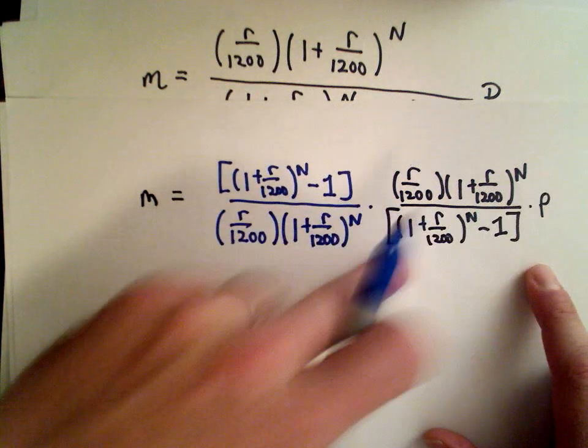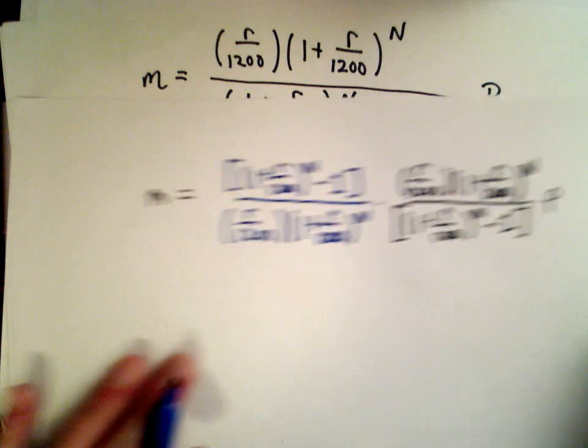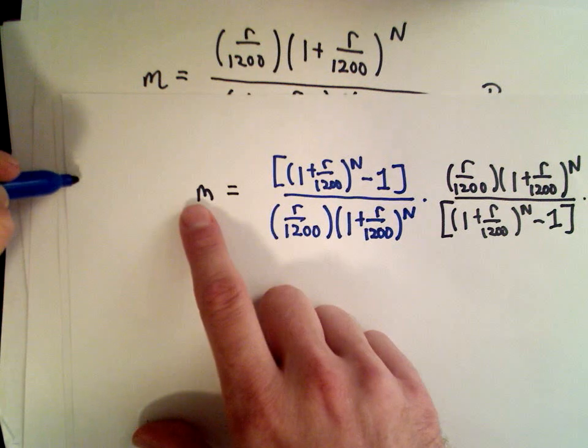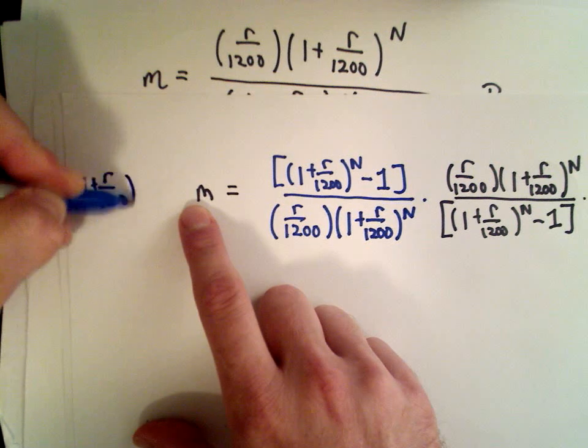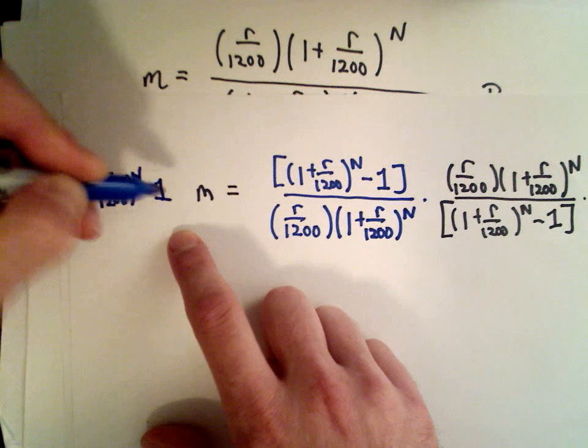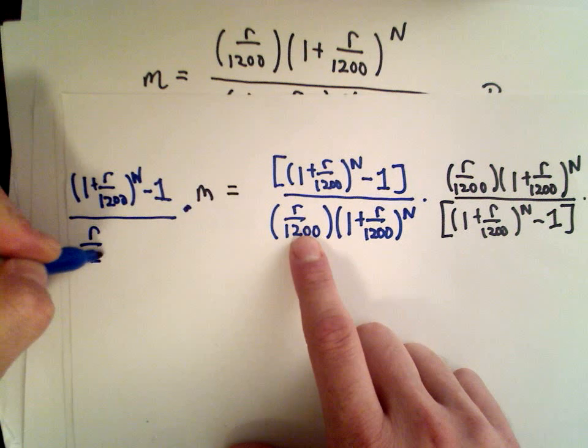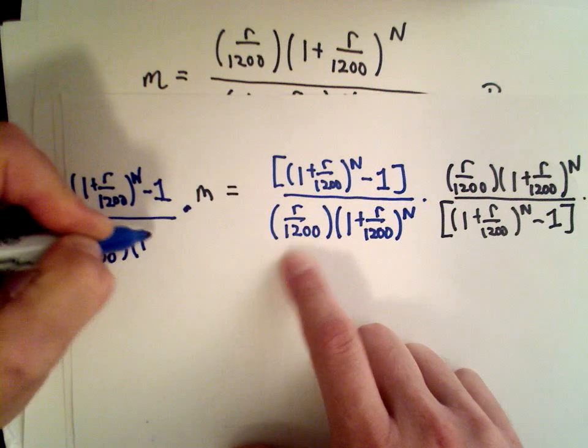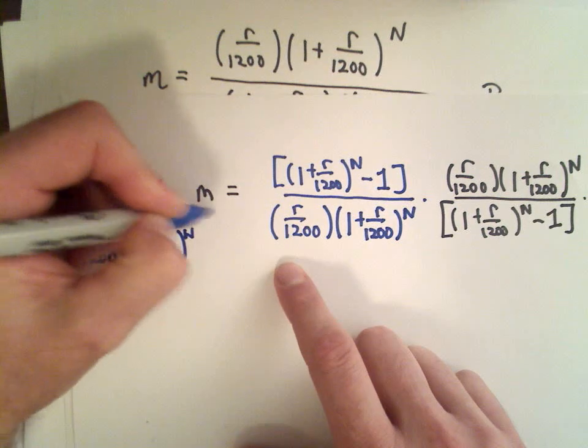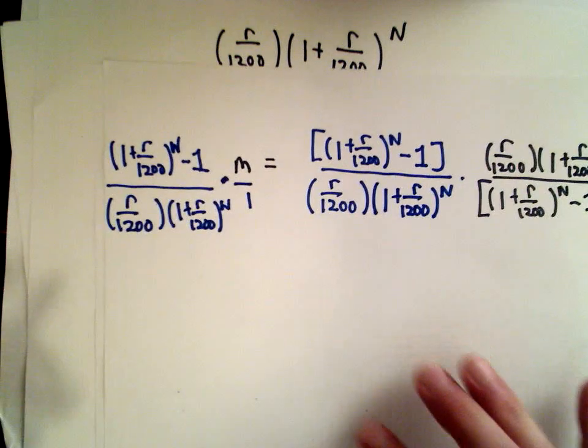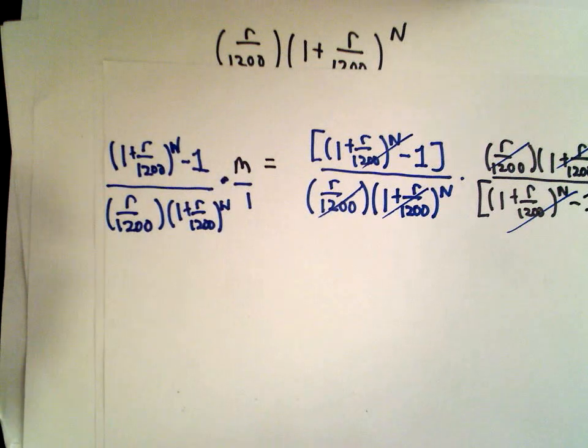The numerator and denominator would cancel. And again, now I've gotten rid of each of these factors that were originally in the numerator as well. Well, again, if I do it on the right, I've got to do it on the left. So there's 1 plus R over 1,200 raised to the power of N minus 1. And then R over 1,200 multiplied by 1 plus R over 1,200 raised to the power of N. And again, you can think about this as being M over 1 if you want to. Again, everything's going to cancel out on the right side except for P.